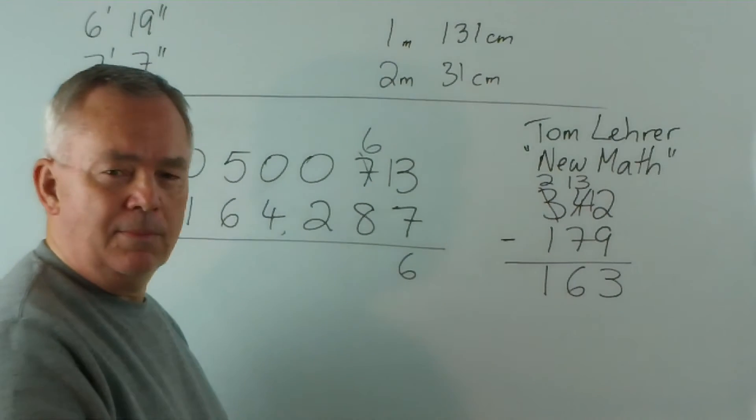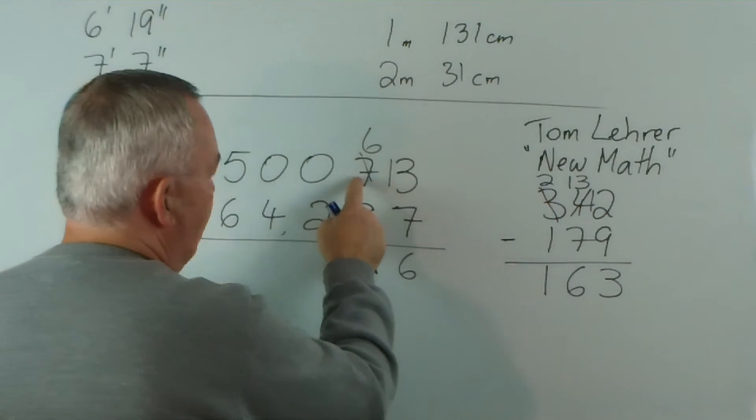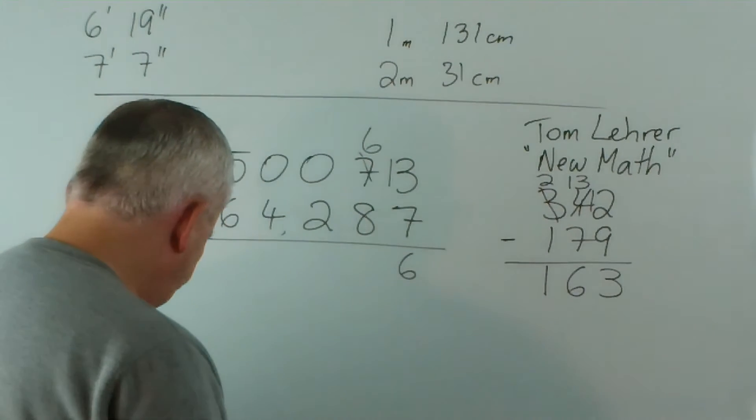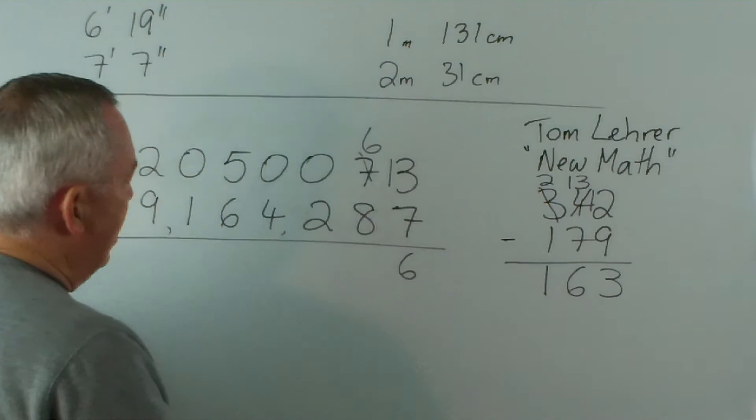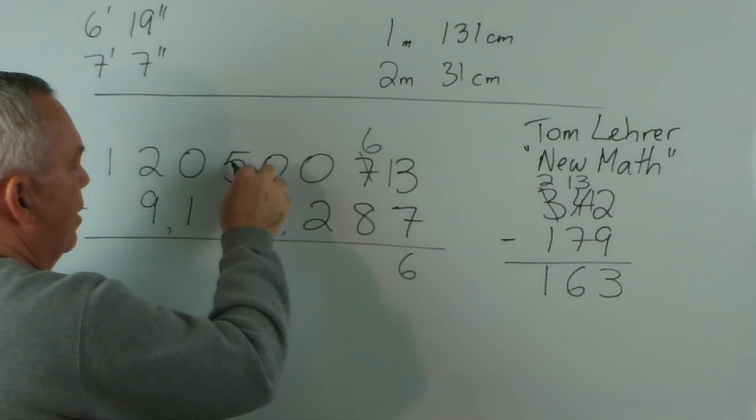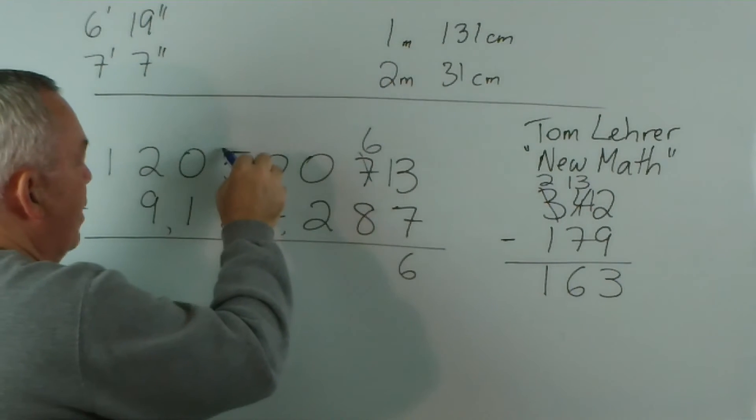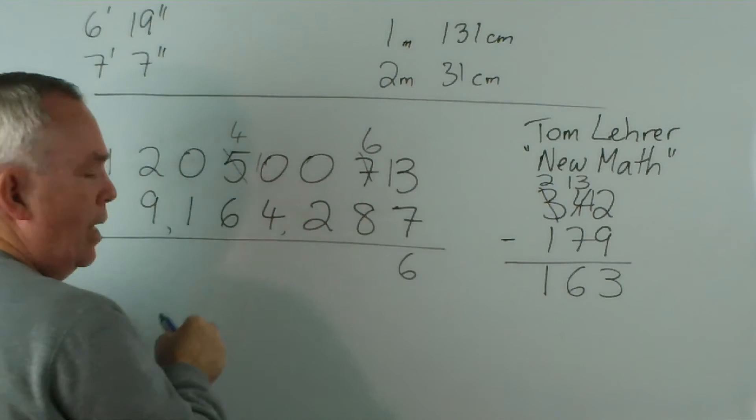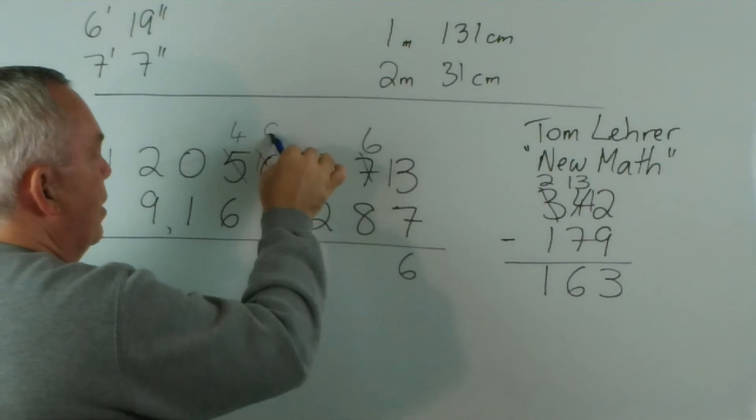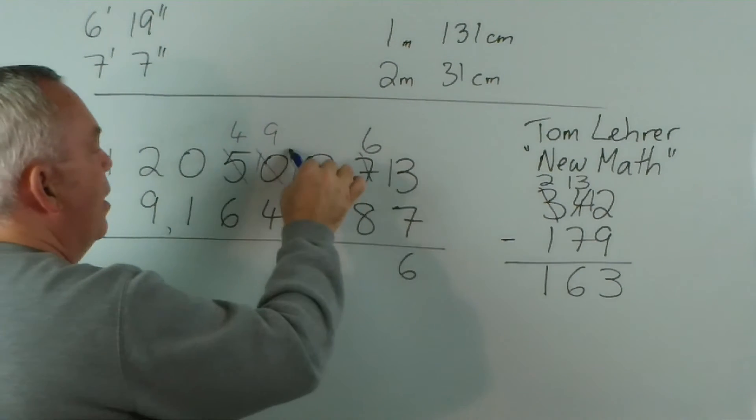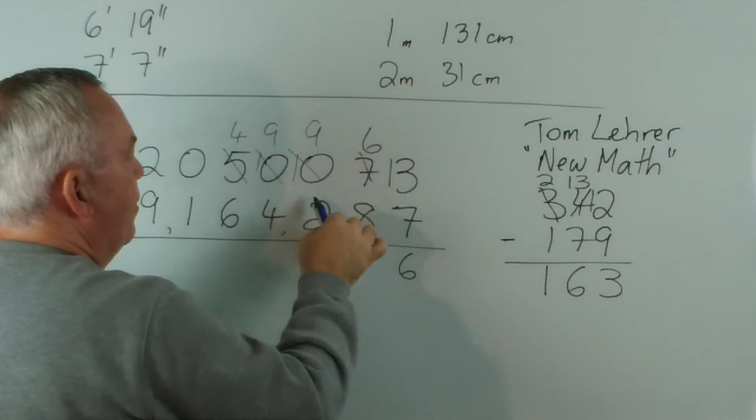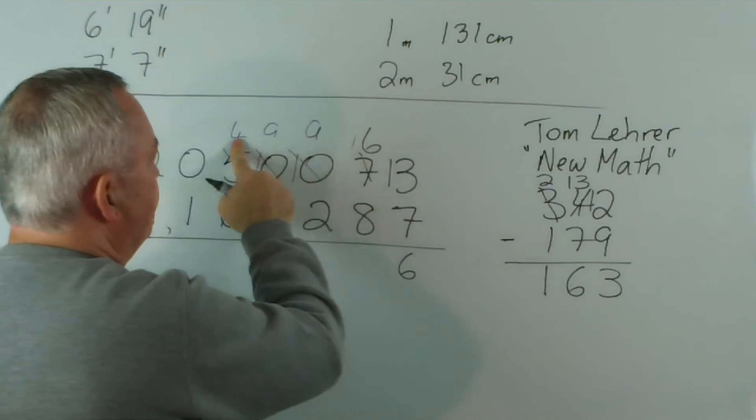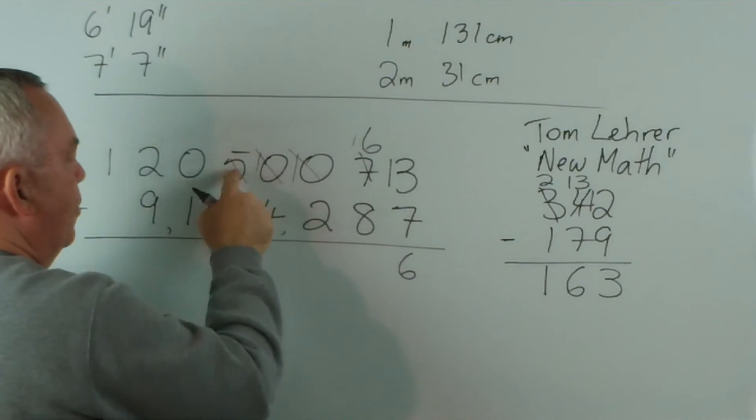So, if we want an extra 10 here, we've got to borrow from over here. And we have two ways of doing it. One way would be ... I'm going to try and do this lightly. We'd cross this off and put a 4, and carry one bunch of 10 across to here to get 10, then borrow one of those to get a 9, carry the 10 across to get a 10, a bunch of those to get a 9, or reduce by one, and carry a bunch of 10 across to get 16.